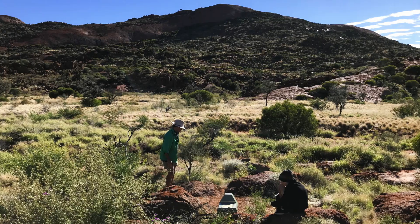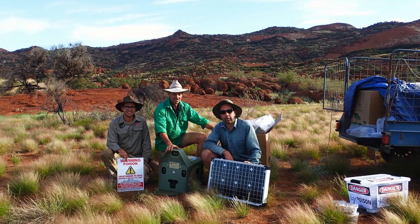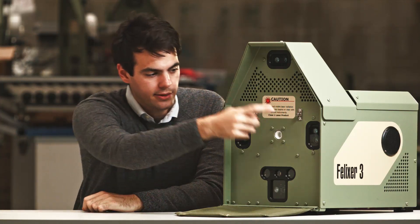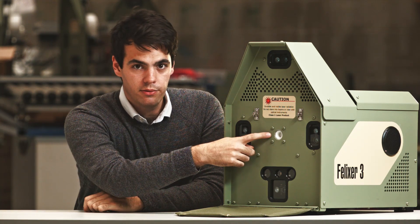The Felixer came to us as a concept to reduce the feral cat population in national parks. We used our four sensors to detect target animals, in particular cats, and our gel squirts out from here.